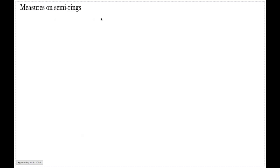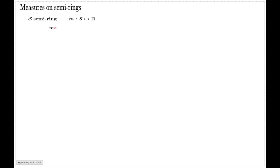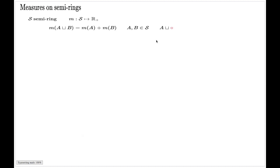Finally in this video we will define measures the way they should be defined in order to avoid any contradictions. The approach is to consider measures only on semi-rings. On a semi-ring, a measure is a function which returns non-negative numbers, which is additive — the measure of a disjoint union equals the sum of the measures of individual elements. A and B are elements of the semi-ring, and because a semi-ring is not always closed under union, we also require that the disjoint union of elements is also an element of the semi-ring.